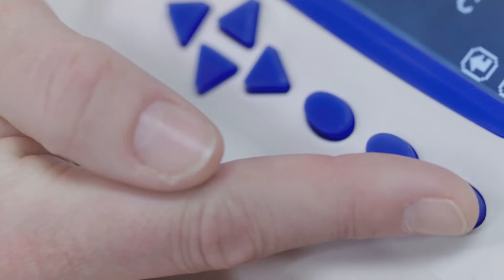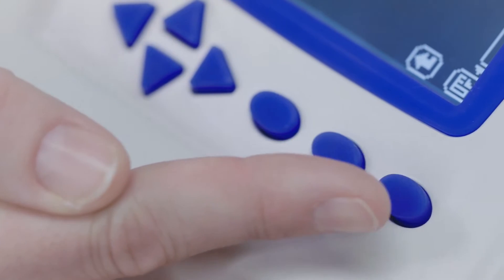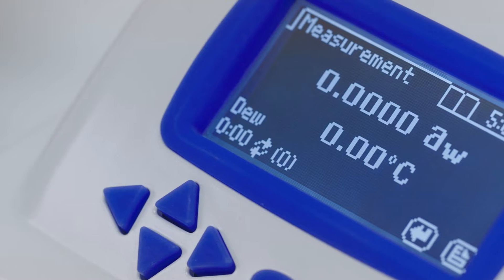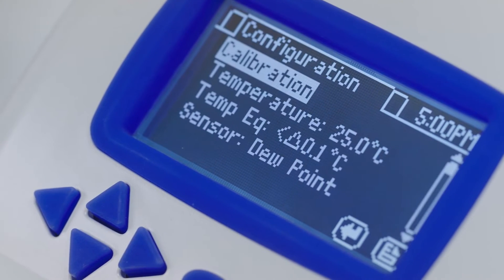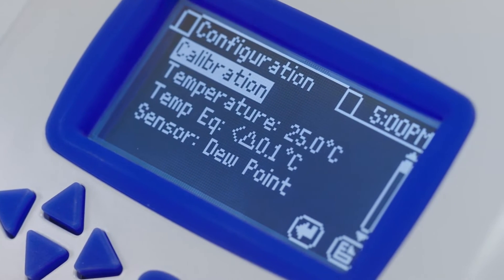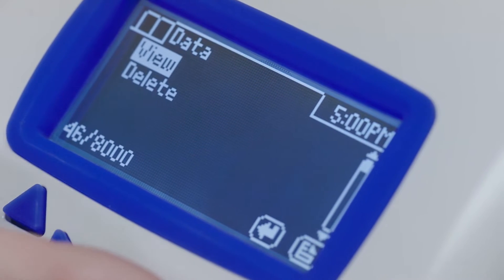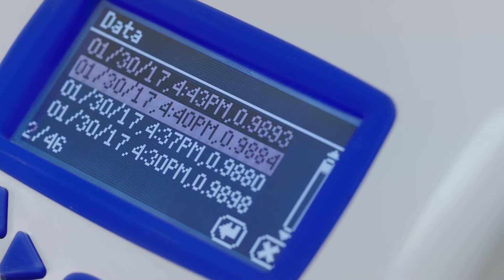One thing common to all these instruments is the screen. There are three screens that you can cycle through by pressing this button. The first one is the measurement screen. The second is the configuration screen. And the third is the stored data screen, where you can cycle through the last 8,000 measurements you have made.